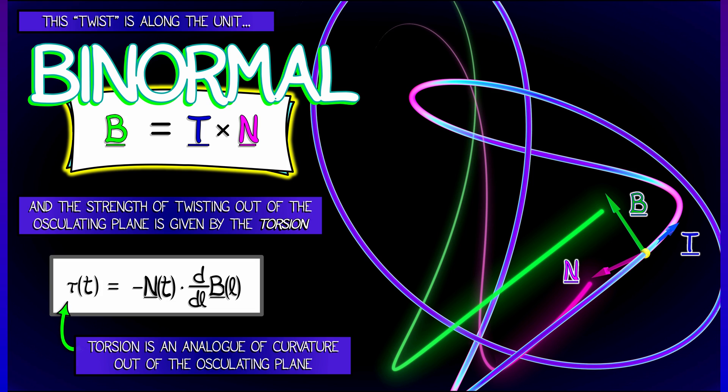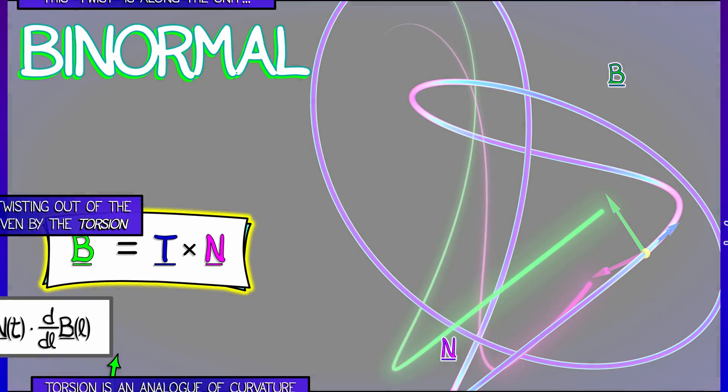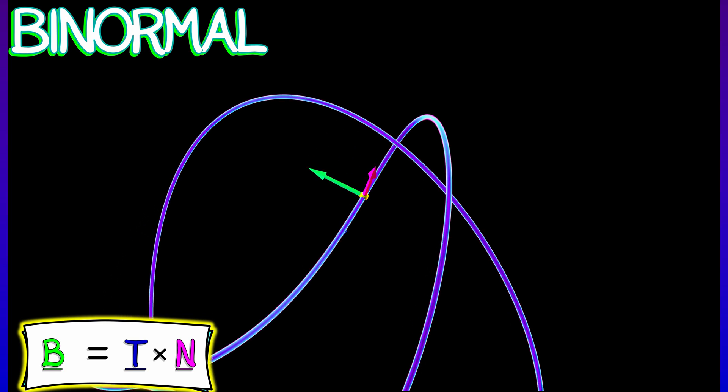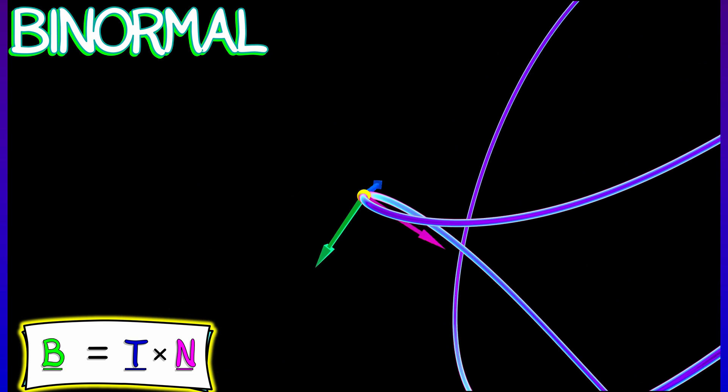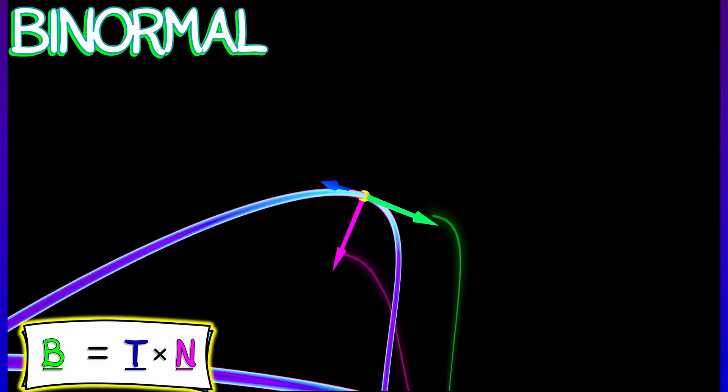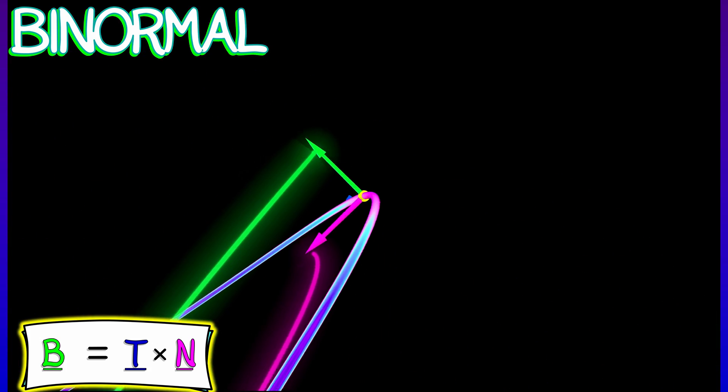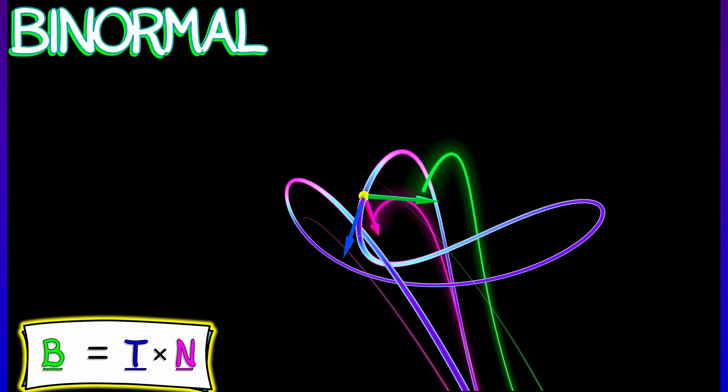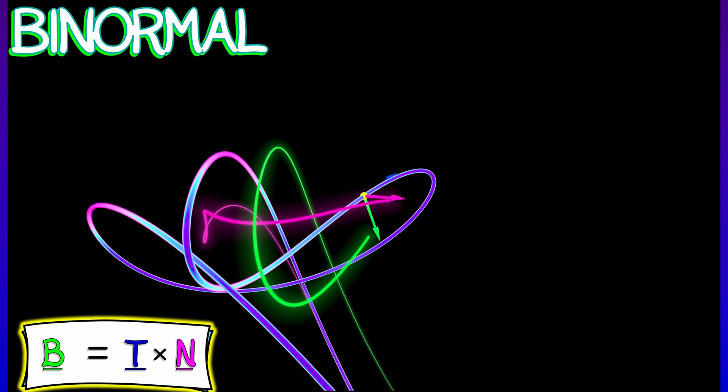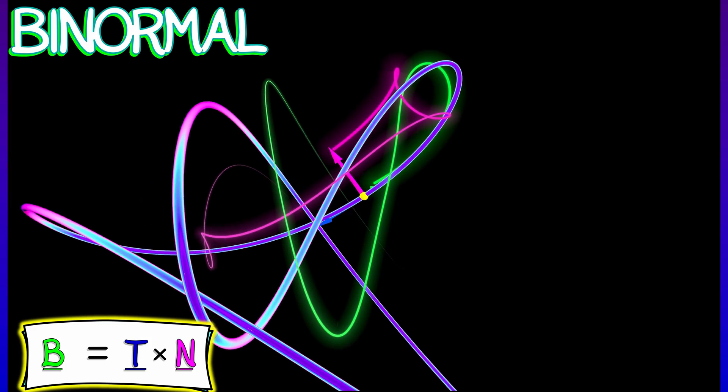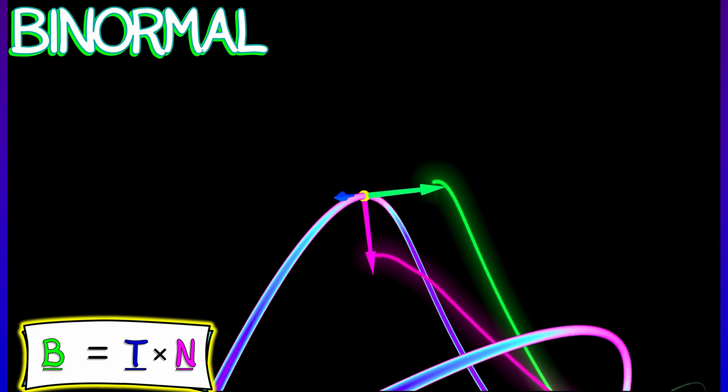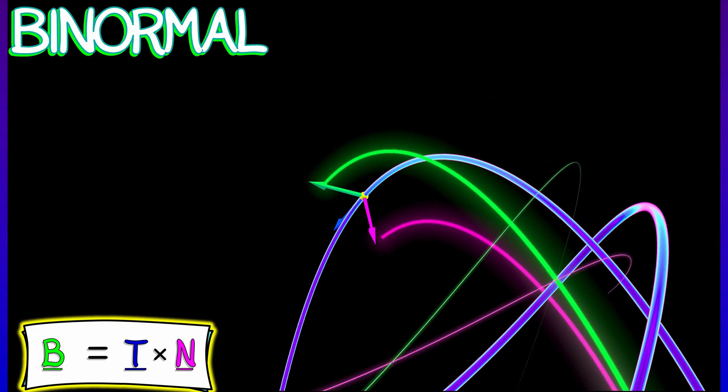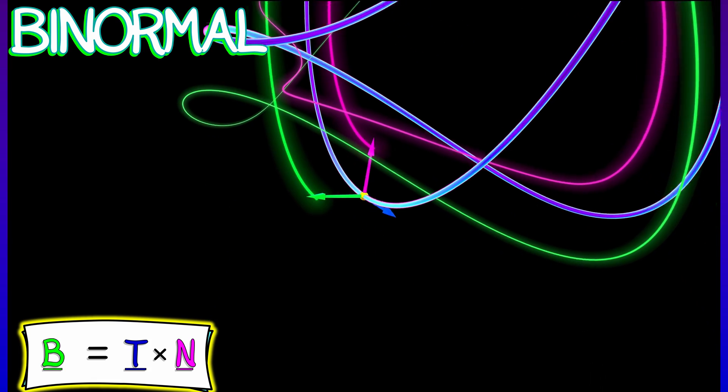Now, again, the formula doesn't matter so much as the intuition that the torsion is an analog of the curvature. And in the same way that the curvature is telling you how you are curving away from the tangential direction, the torsion is telling you to what degree you are twisting out of that osculating plane, out of that plane defined by the unit tangent and the unit normal directions.